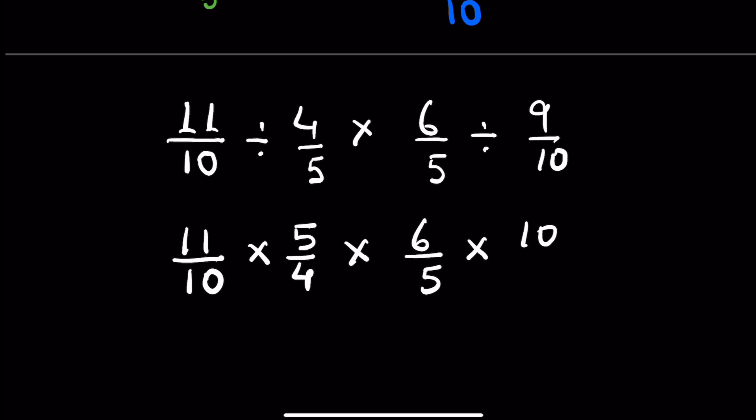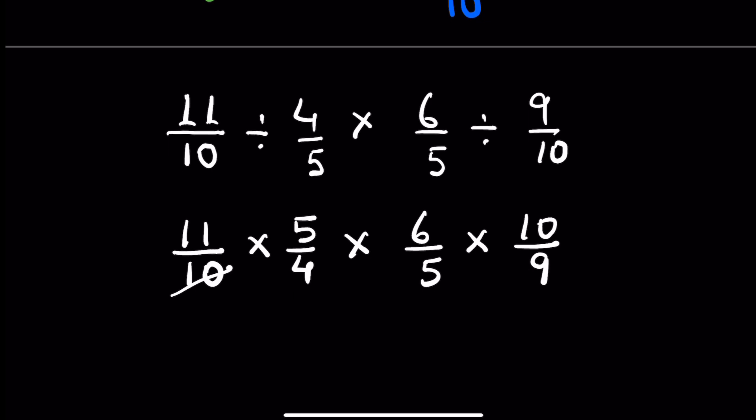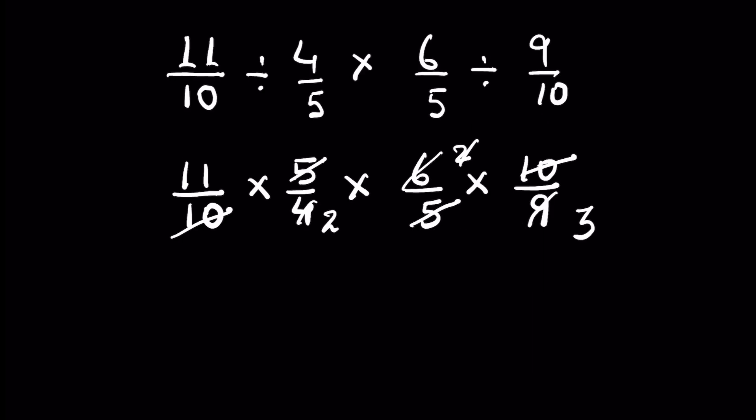Then multiplication, 10 upon 9. Now let's divide. We can cancel this 10 with this 10, this 5 with this 5. 3 times 2 is 6, and 3 times 3 is 9. 2 times 2 is 4. So answer is 11 upon 3 times 2 is 6.